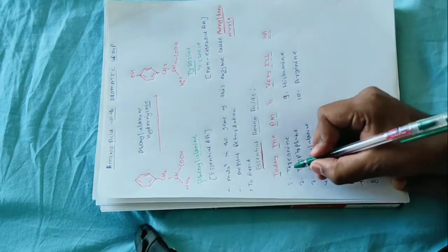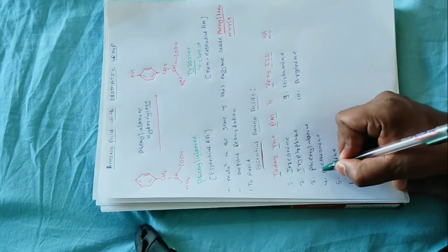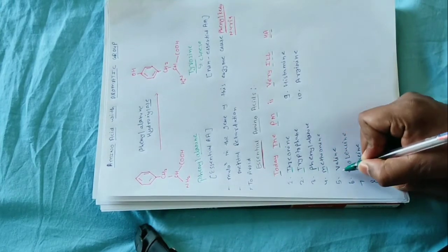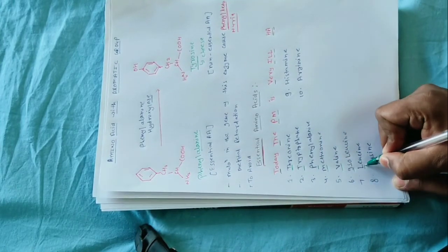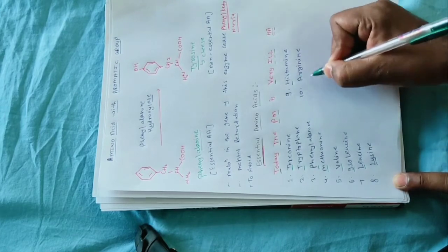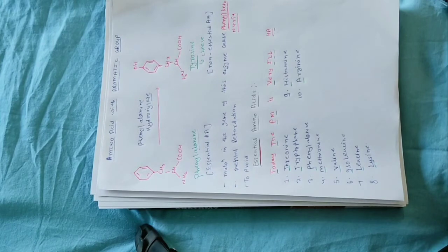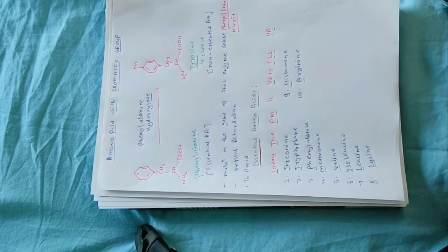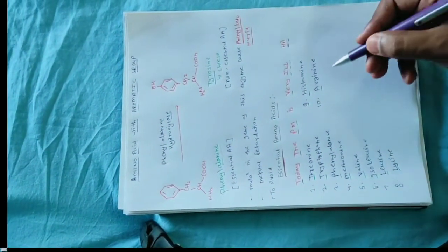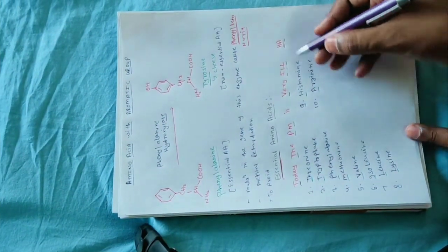यानि वो amino acids हैं — T T P M V I L L H A — 'Today the PM is very ill HA'. इसका एक mnemonics है जिससे आप इसको याद रख सकते हो। तो इसमें हैं: Threonine, Tryptophan, Phenylalanine, Methionine, Valine, Isoleucine, Leucine, Lysine, Histidine और Arginine।